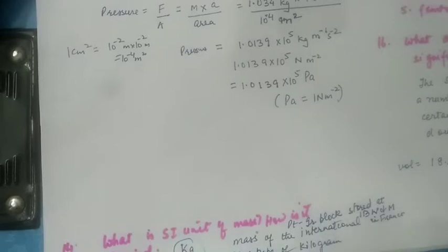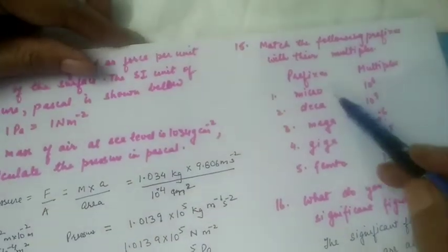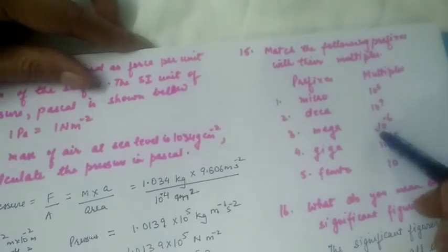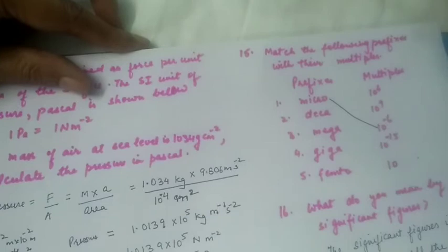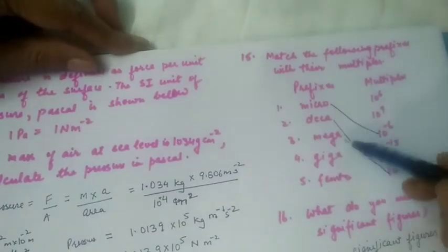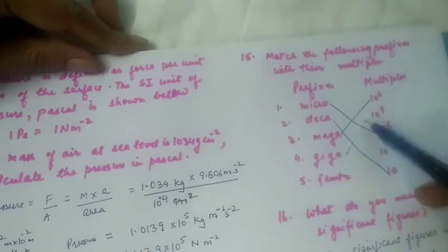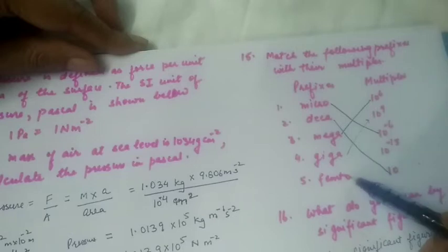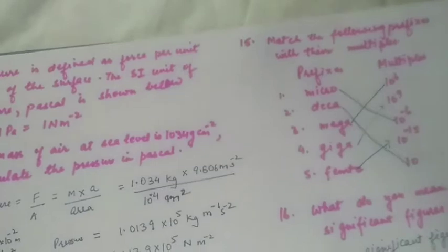Next question: match the following prefixes with their multiples. Micro means 10⁻⁶, deca means 10, mega means 10⁶, giga means 10⁹, and femto means 10⁻¹⁵.